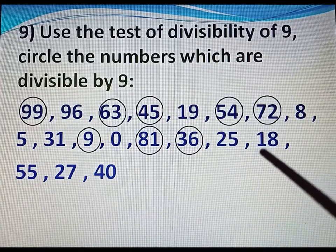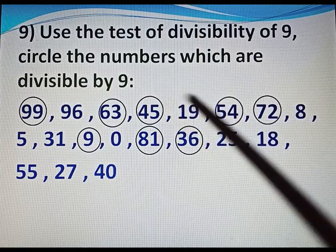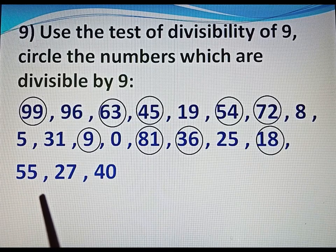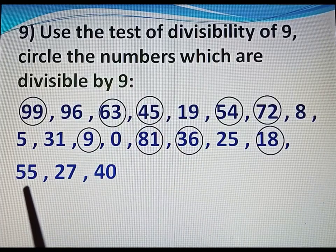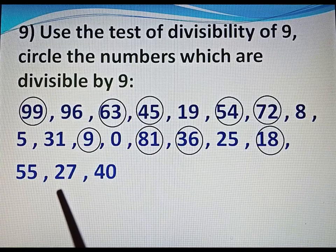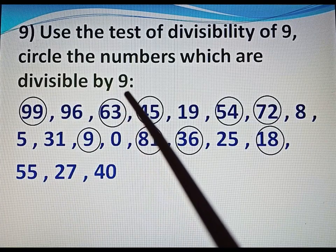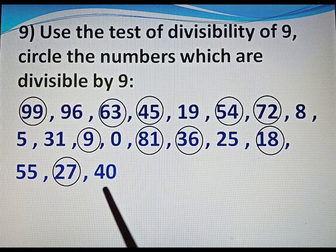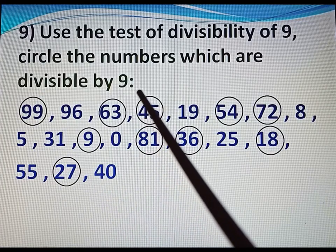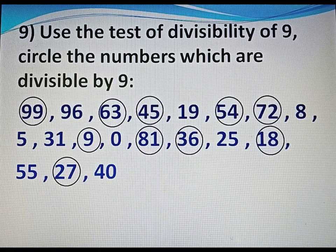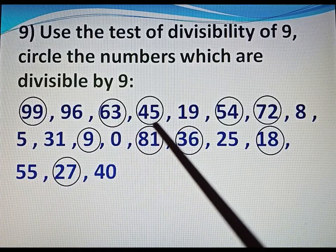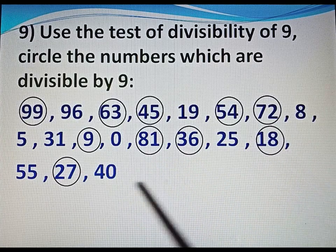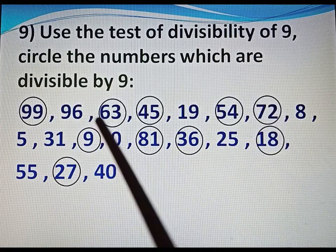Next number 18: 1 plus 8 equals 9, divisible by 9 — circle 18. Next number 55: 5 plus 5 equals 10, not divisible by 9. Next number 27: 2 plus 7 equals 9, divisible by 9 — circle 27. Next number 40: 4 plus 0 equals 4, not divisible by 9. So, 99, 63, 45, 54, 72, 9, 81, 36, 18 and 27 are the numbers which are divisible by 9.